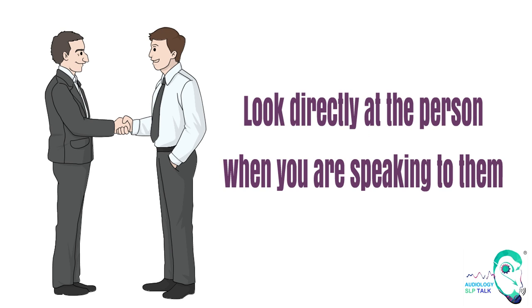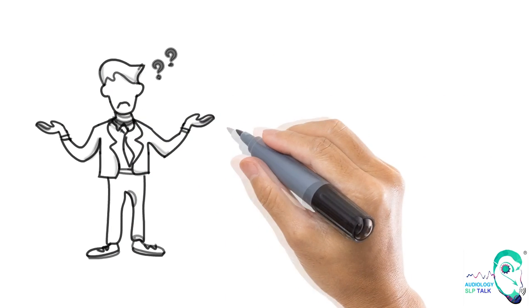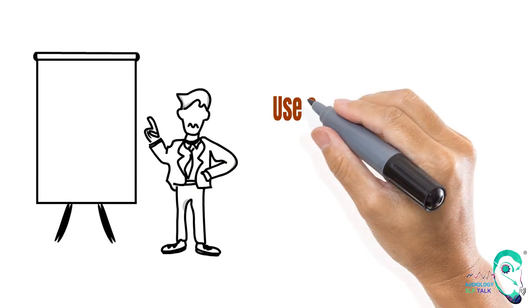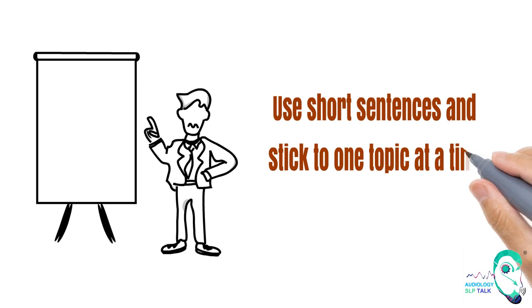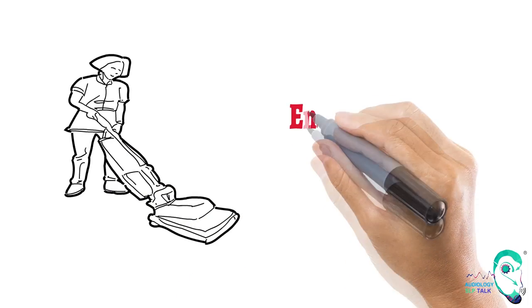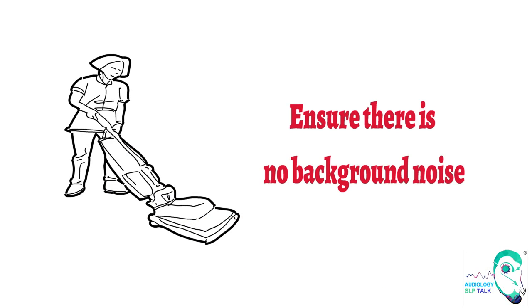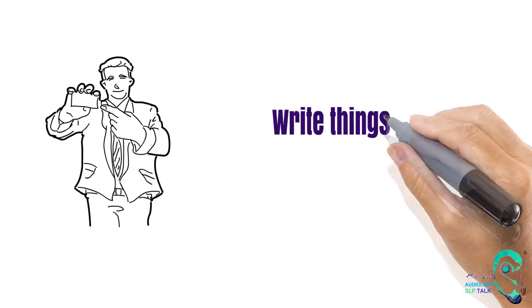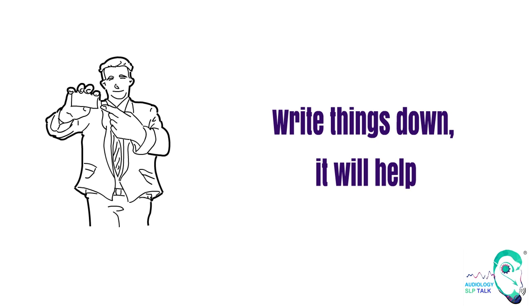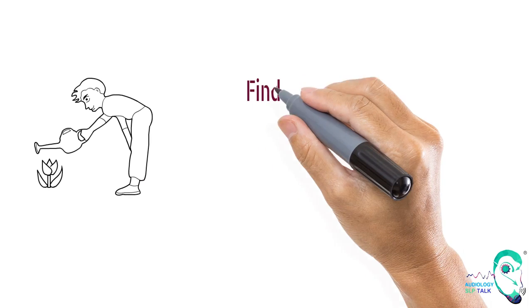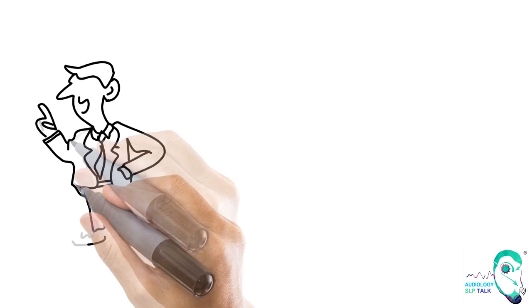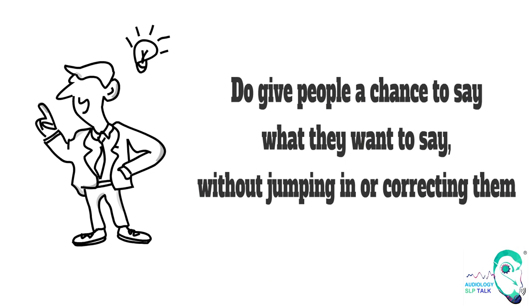Here are some do's while speaking to individuals with aphasia. Look directly at the person when you are speaking to them. Speak slowly and clearly but use a normal tone of voice. Use short sentences and stick to one topic at a time. Ensure that there is no background noise. Reassure the person that you understand their frustration. Write things down — it will help. Find out the person's employment, interests and passions before and after the stroke and try to relate them. Do give people a chance to say what they want to say without jumping in or correcting them.